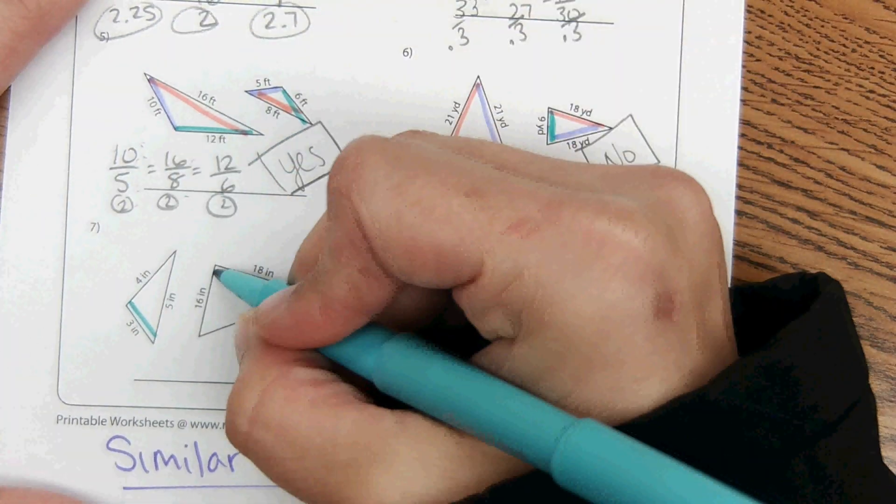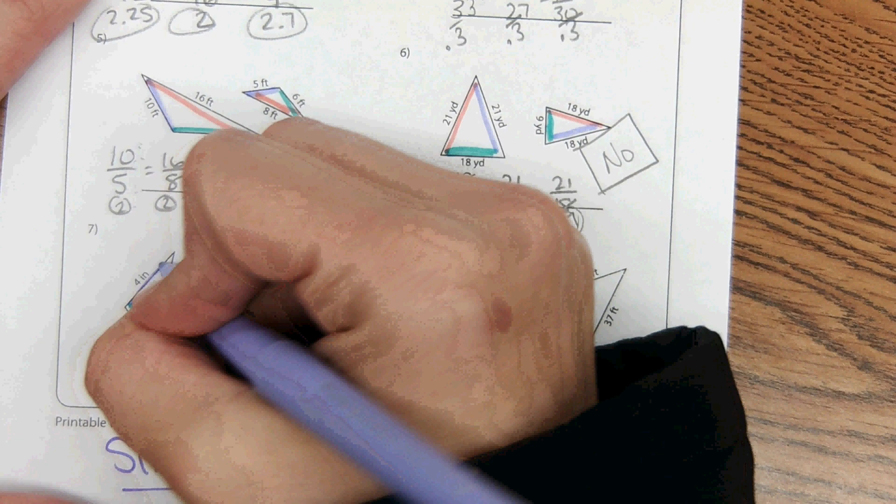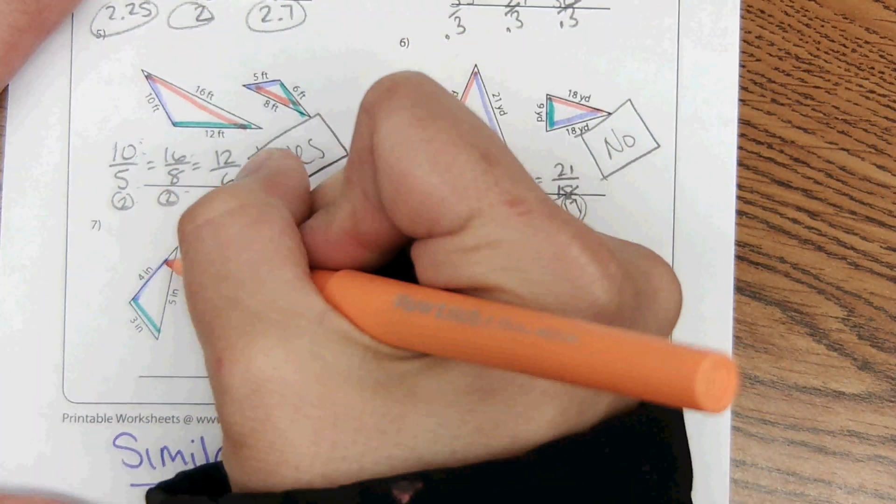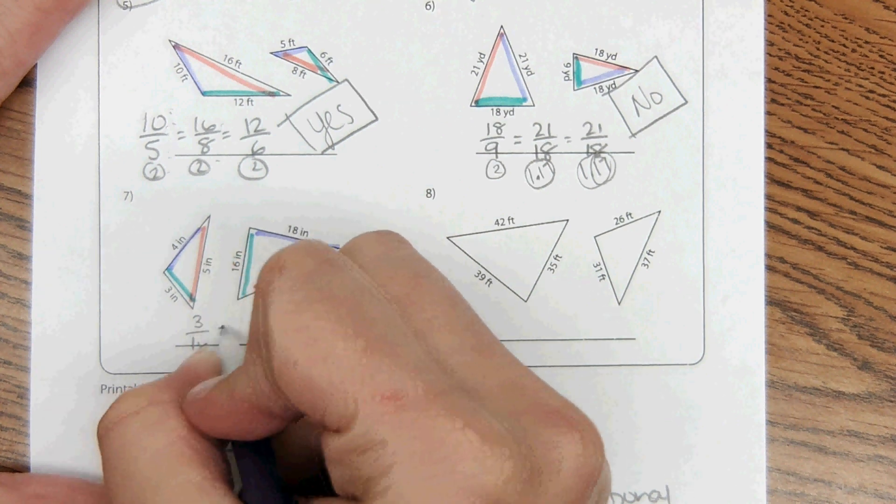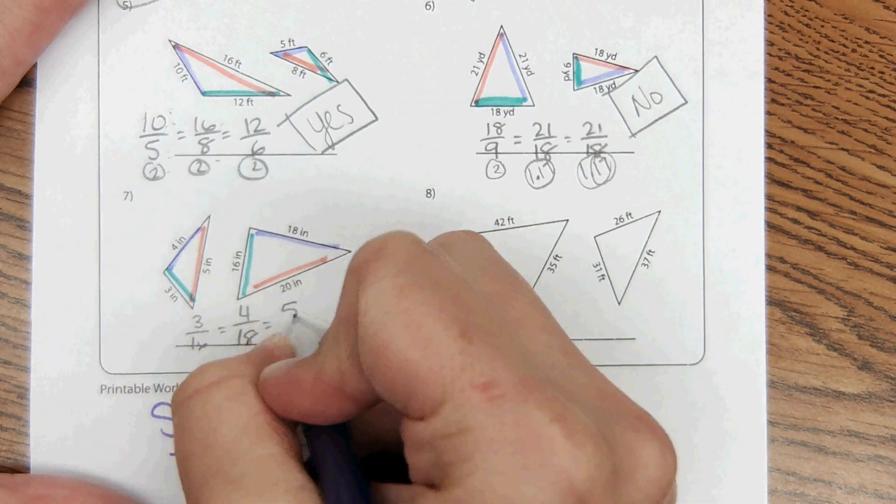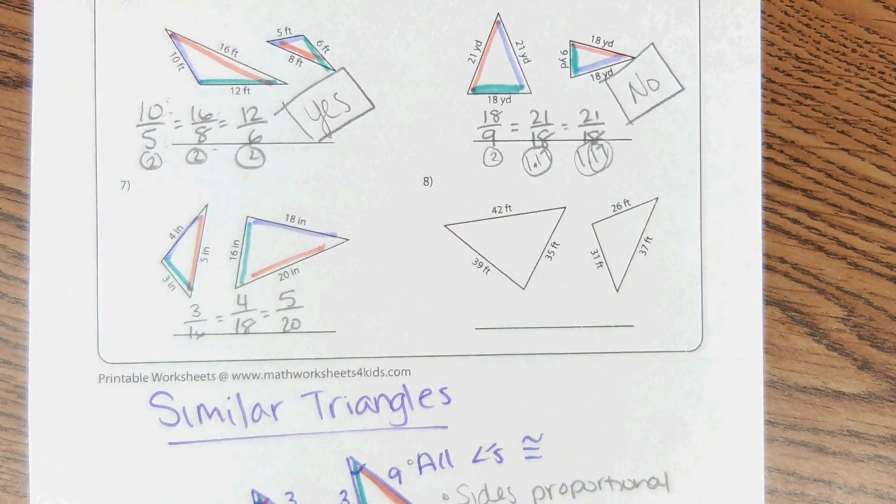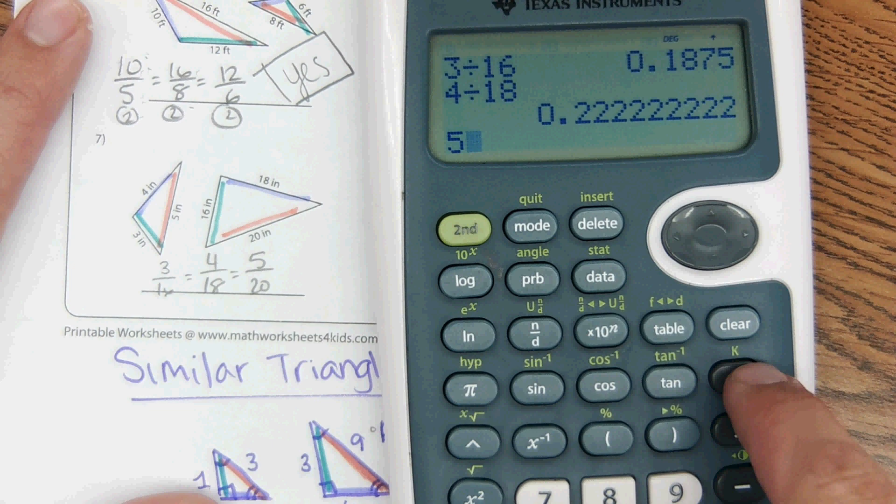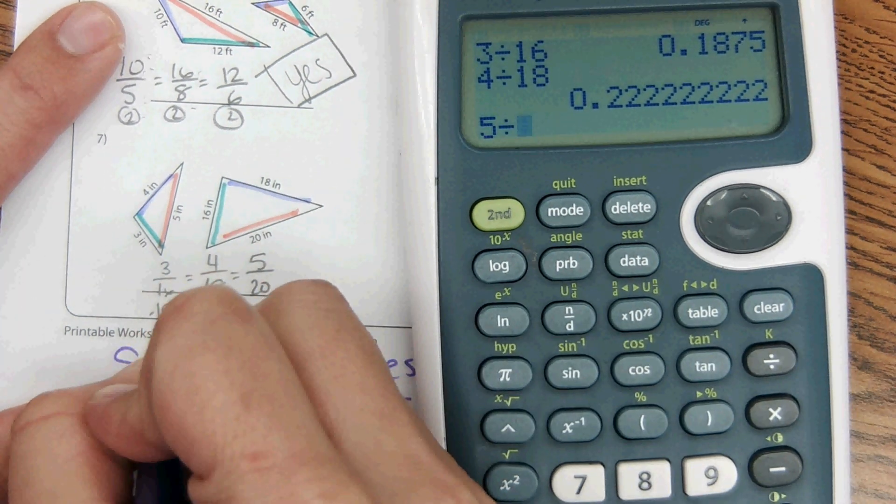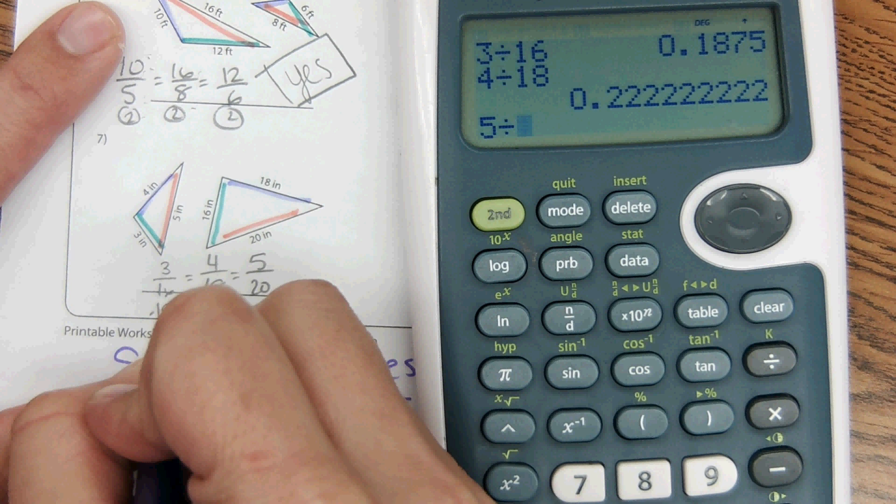Number seven, I can already see it's not going to be similar because those are totally different shapes. Let's see, short and short. Teal over teal, purple over purple.